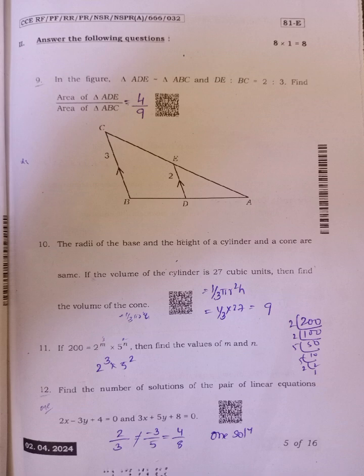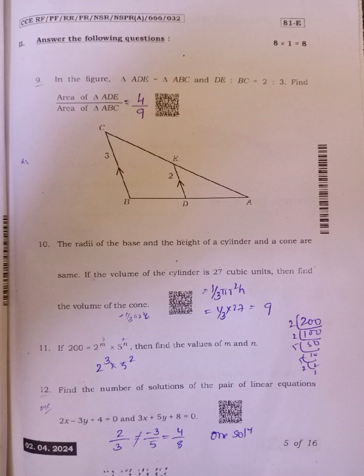Twelfth, find the number of solutions of the pair of linear equations 2x minus 3y plus 4 equals 0 and 3x plus 5y plus 8 equals 0. If I check the condition of lines, 2 by 3 not equal to minus 3 by 5, then it is unique solution, nothing but one solution.